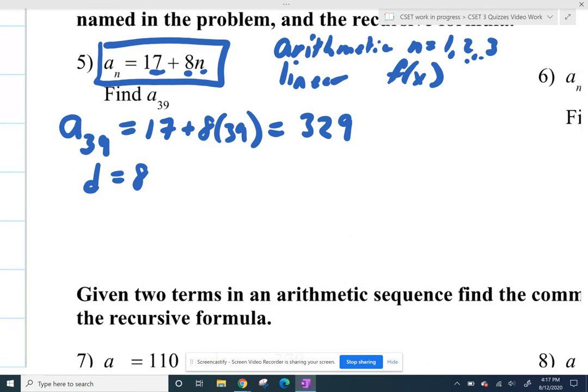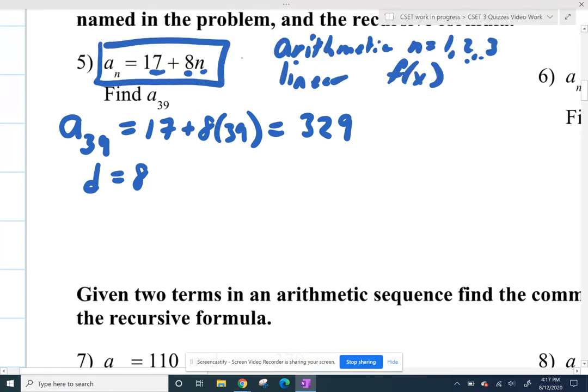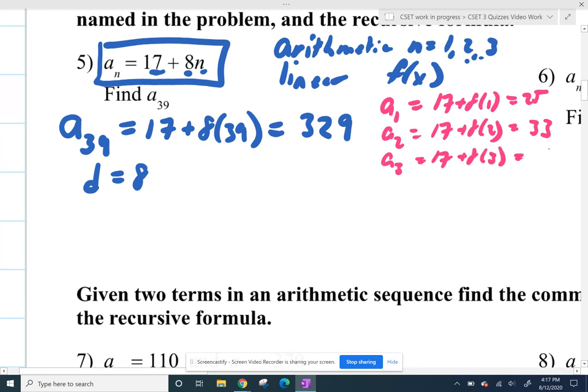But if you didn't know that, you're always welcome to just play with the series and see what's happening. Like I could find my first term by plugging in 1. So 17 plus 8 times 1 is 25. I could get my second term by plugging in 2, that'll be 16 plus 17 is 33. And my third term by plugging in 3, I'll get 41. And you see that you are indeed adding 8 every time, so that common difference is 8.